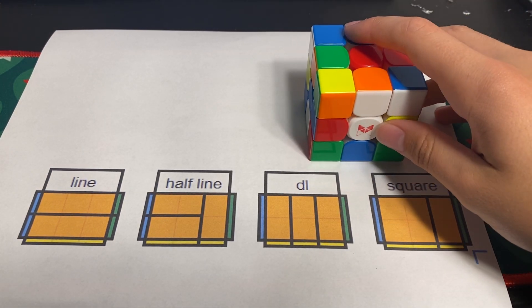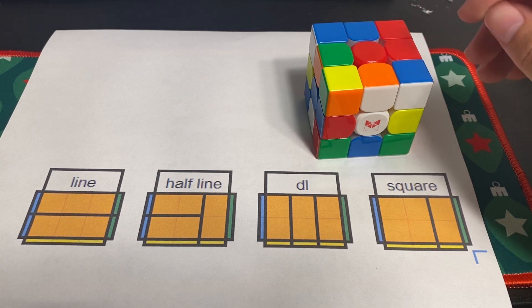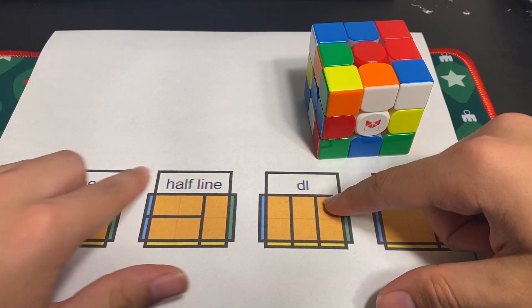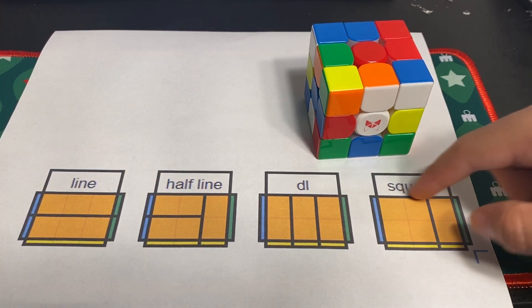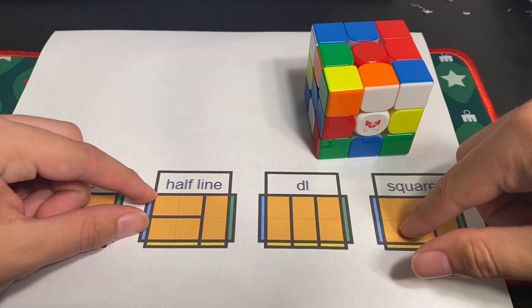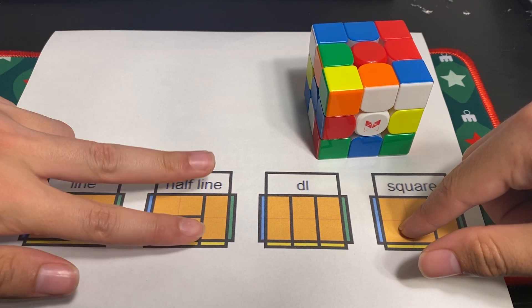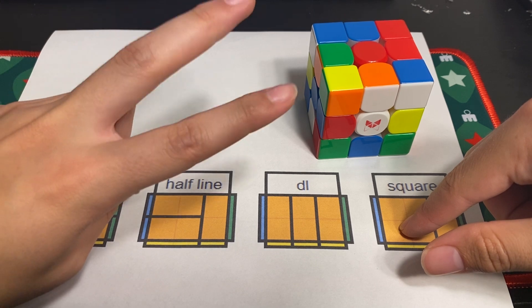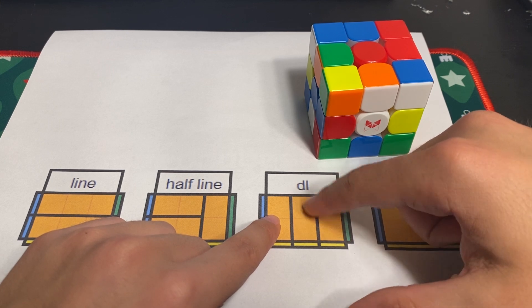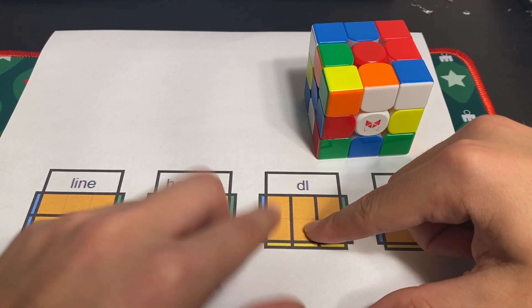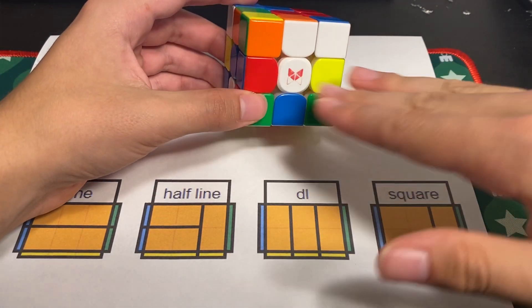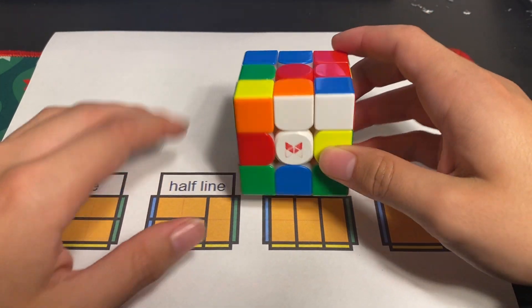Now we're going to talk about half lines. Half lines are really where our first block approaches start to get interesting. This is a half line and it's very similar to the square. Instead of being given the square for free what we're doing is we're building it using two half lines like this. So instead of a DL and center pair plus an F2L pair we're doing two horizontal half lines on the cube.